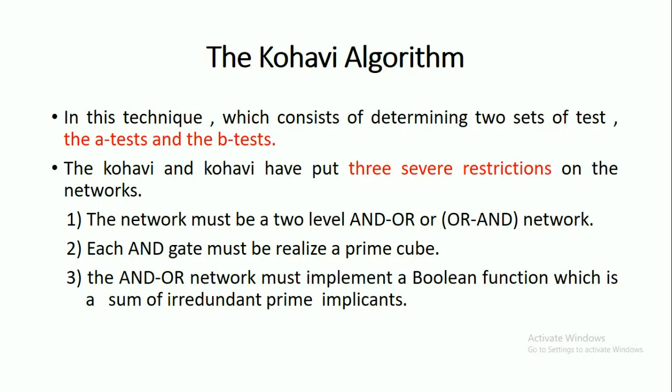We have to follow these three restrictions. First, the network must be a two-level AND-OR or OR-AND network. Second, each AND gate must realize a prime cube. Third, the AND-OR network must implement a boolean function which is a sum of irredundant prime implicants — that is, there are no redundant or repeated prime implicants within the boolean function.